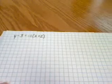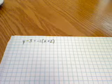Today I'm going to show you how to graph using the point-slope form of the equation. The equation I have here, y minus 3 equals negative 1 times the quantity of x plus 2, is in this particular form.